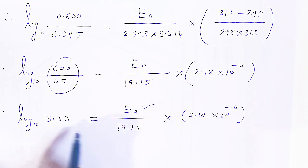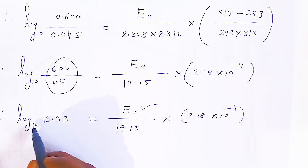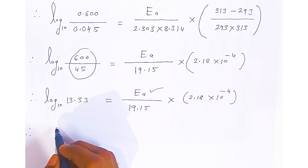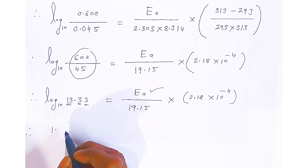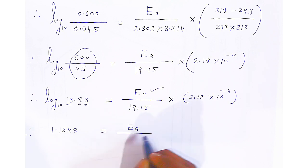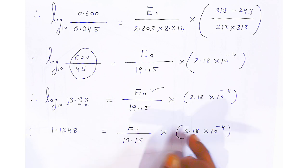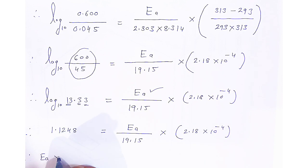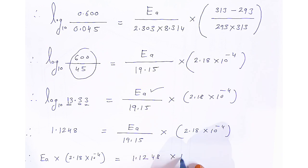Now we do cross multiplication. Ea into 2.18 into 10 to the power minus 4 equals 1.1248 into 19.15. Therefore, Ea equals 1.1248 into 19.15, divided by 2.18 into 10 to the power minus 4.